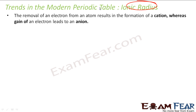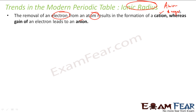We will talk about ionic radius now. So what is an ion? If you have any atom and you take out an electron or you add an electron, you get ions — you get cations or anions. If you add one negative charge, you get an anion. Anion is nothing but a negative ion.